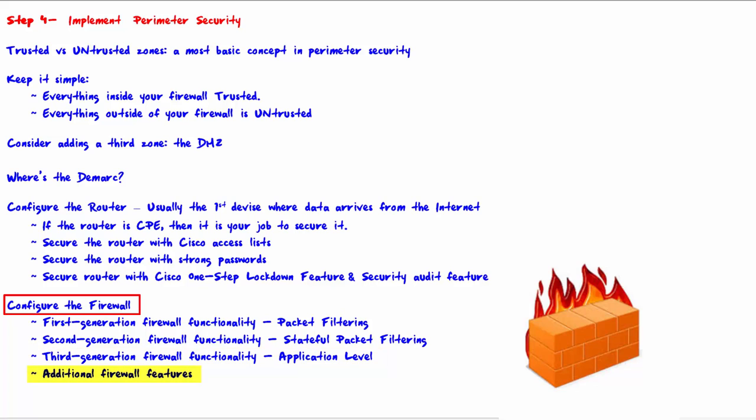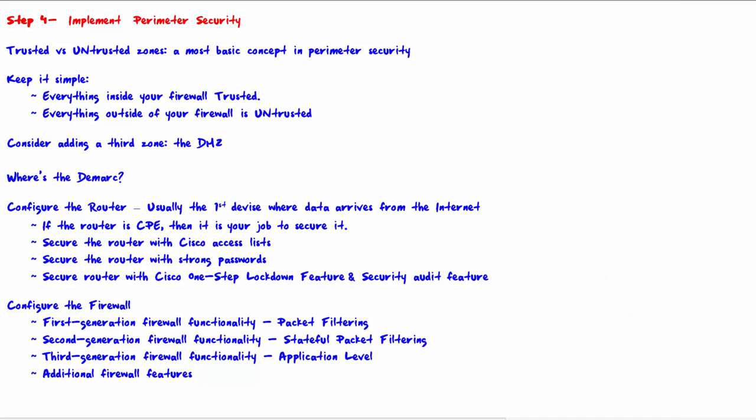In addition to first, second, and third-generation firewall functionality, many firewalls include other security features such as VPN capabilities, content filtering (which allows you to block end users on your LAN from accessing certain websites), gateway antivirus, intrusion prevention, anti-spyware, and logging and alerts. Even though these features are not part of the core firewall generations, many firewalls provide them and you definitely want to take advantage of those. That is the end of this video — we will see you in Step 5.